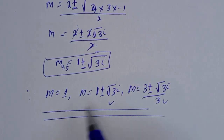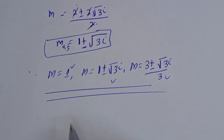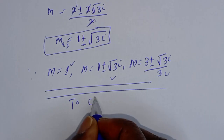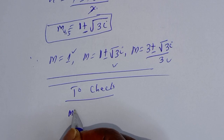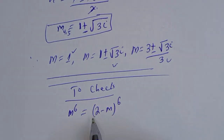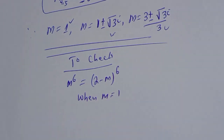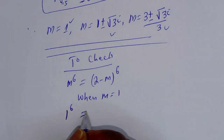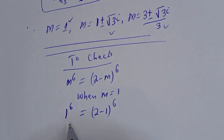The only real solution we can check is m equals 1. Substituting into the original equation m raised to power 6 equals 2 minus m raised to power 6: 1 raised to power 6 equals 2 minus 1 raised to power 6. The left side is 1, and 2 minus 1 raised to power 6 is also 1. This is true, confirming m equals 1 is correct.